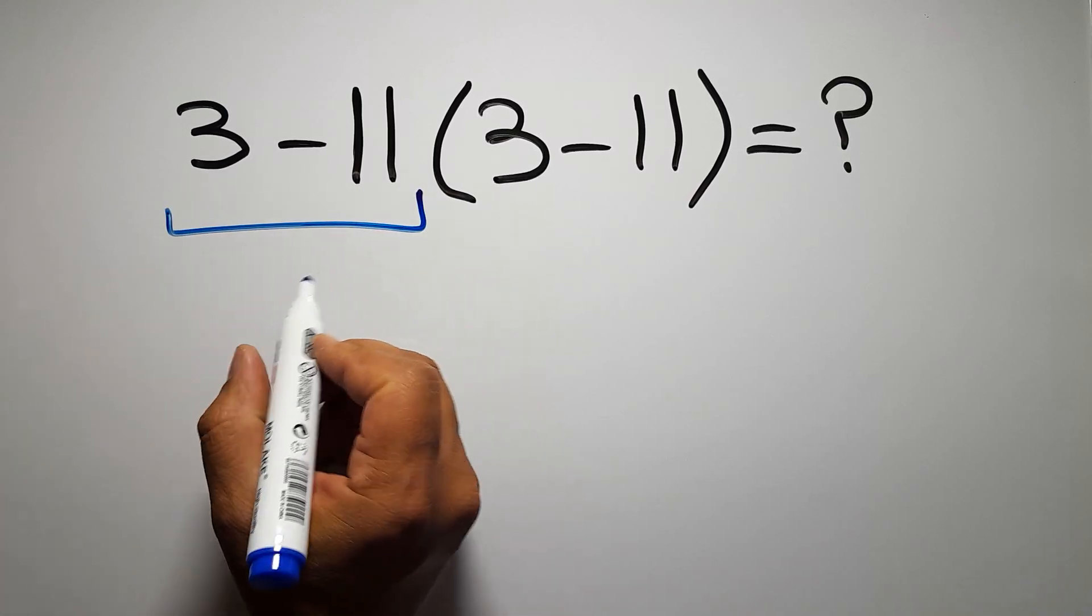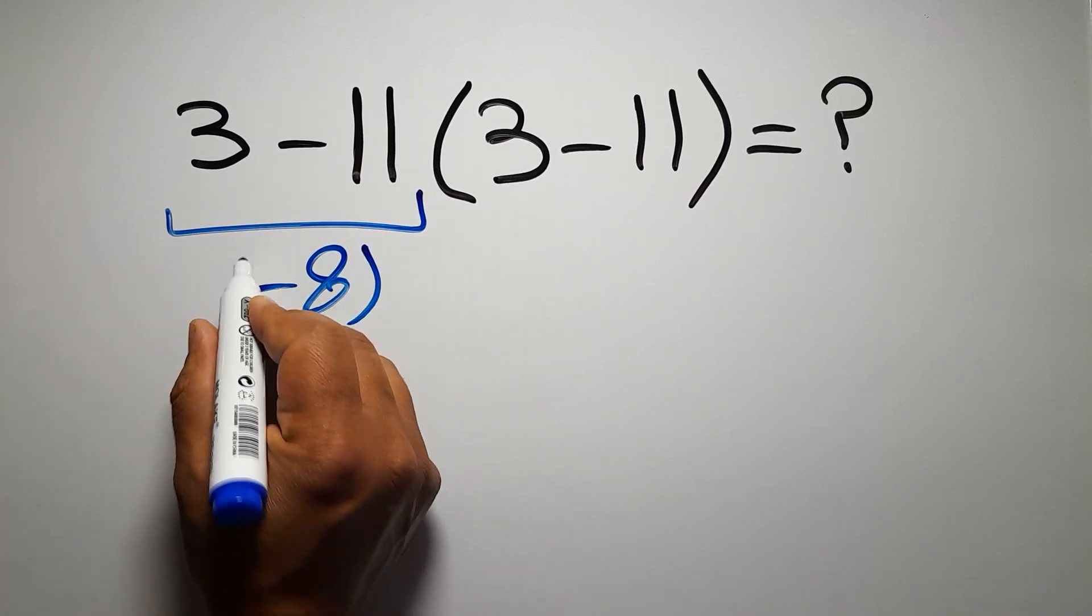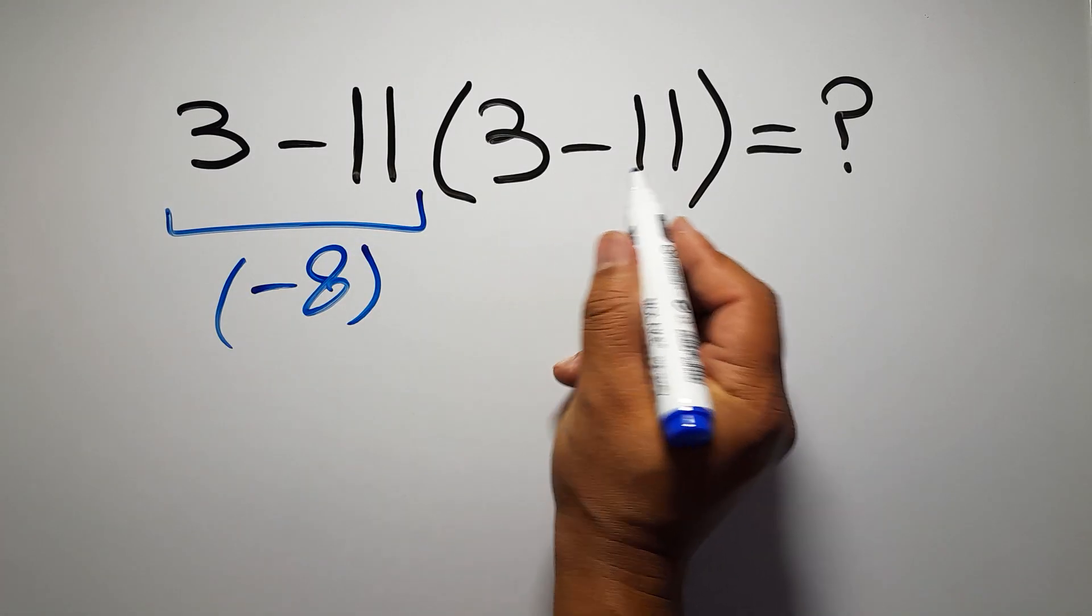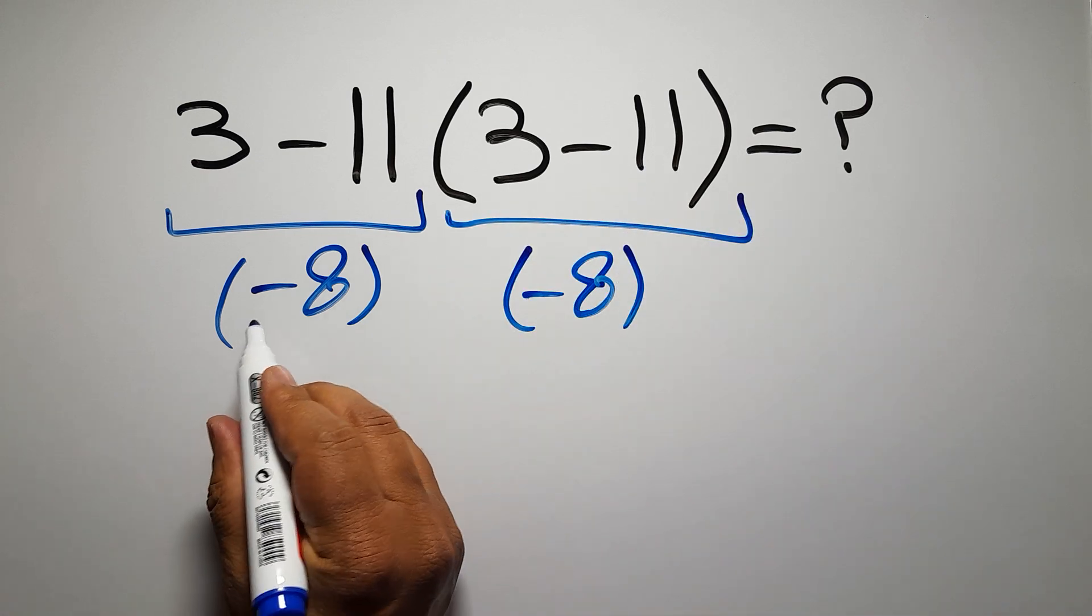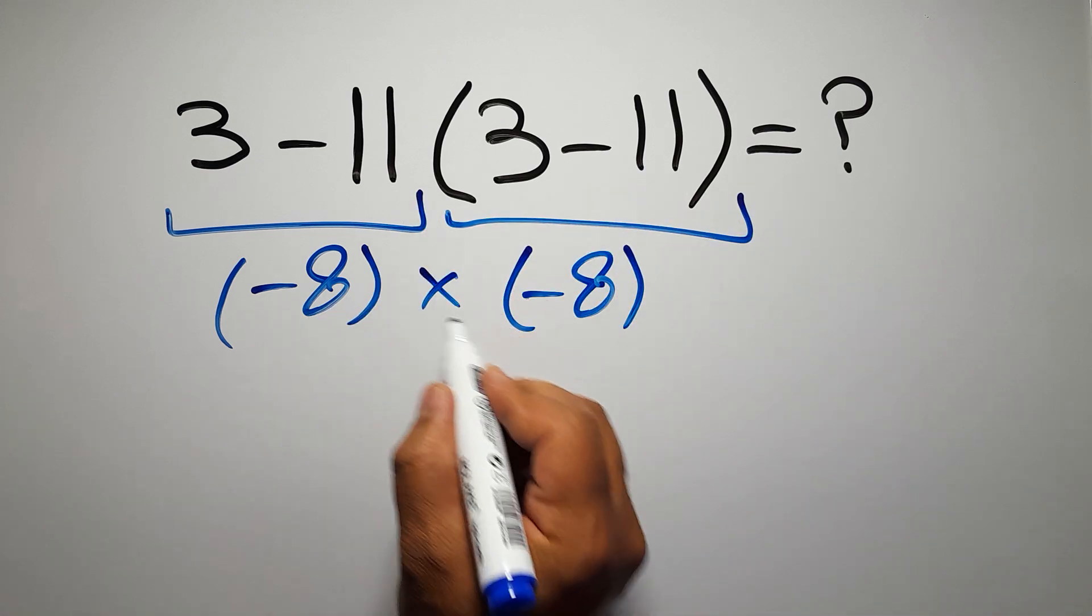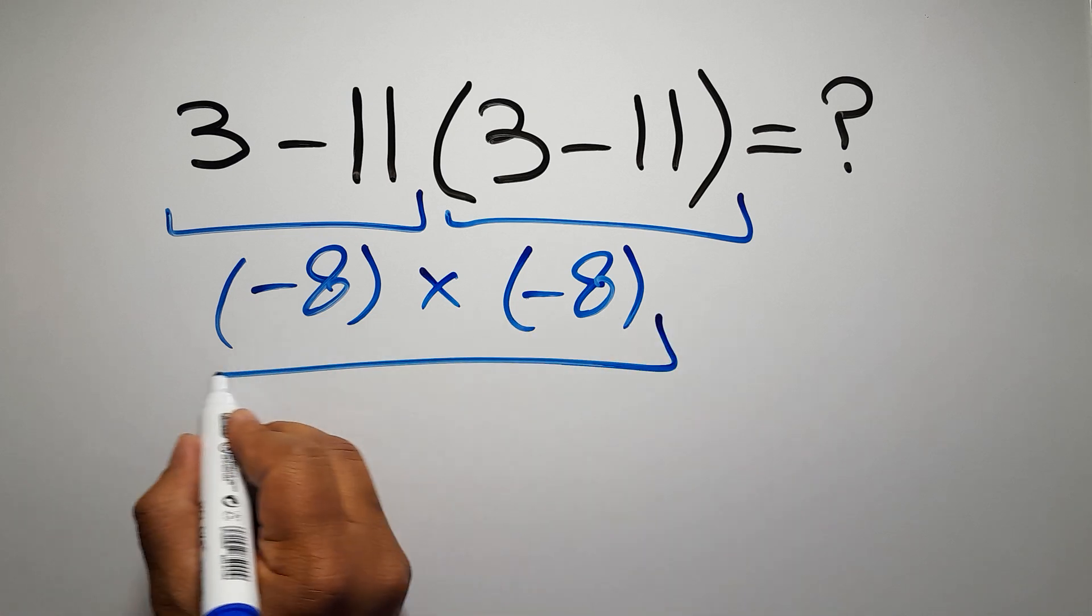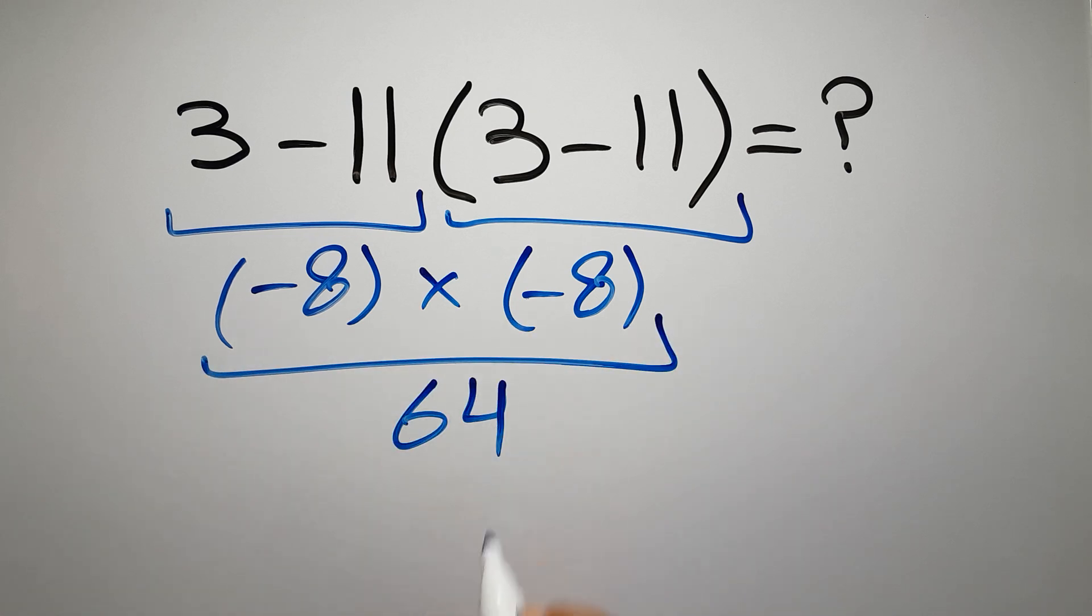3 minus 11 gives us negative 8, and again here we have 3 minus 11. So negative 8 times negative 8 equals 64, but this answer is not correct because according to the order of operations...